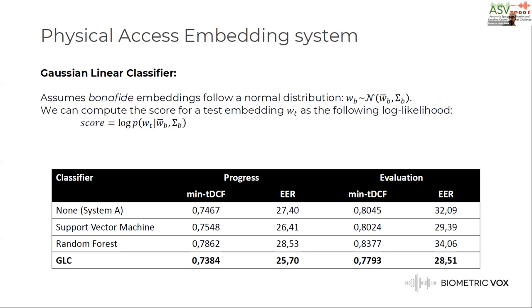What we found most interesting about this system is not only that it achieved good results, but also that although the embedding extractor is trained using data for both classes, the classifier itself is a one-class classifier trained only on genuine data. We think this is a very interesting property in the sense of providing stability and avoiding overfitting to specific attacks. It seems to be at least an interesting line for future research.